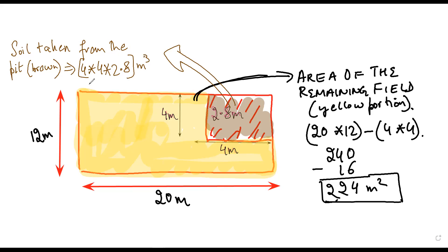So this soil would be spread all over this yellow portion, all over this yellow portion. So this volume, 4 into 4 into 2.8, this would be spread over this area. Have you guys understood?